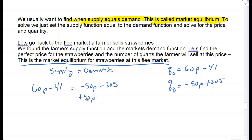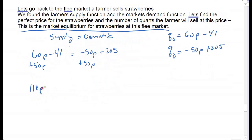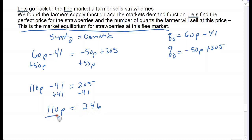I'll move the negative 50p to the other side, so I get 110p minus 41 equals 205. Move the 41 over: 110 times price equals 246. Divide by 110, and since it's a price, I always round to the penny. So my equilibrium price comes out to approximately $2.24.